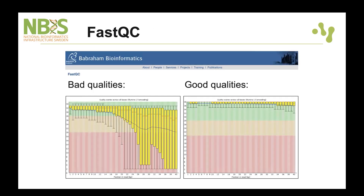Compare that to the good quality example, where the quality score remains well above 30 — even towards 40 — throughout the entire sequencing run and the entire length of the reads.